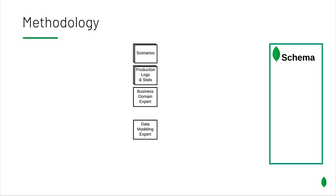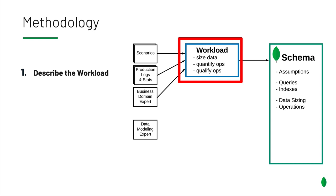Our system will have different inputs. In order to design it, maybe we will get some scenarios from a requirement document, production logs if we're migrating from a relational database to MongoDB, or a prototype that generated logs we can use. We may have a business domain expert — someone who really knows how things should work — that we can interview. And hopefully we also have a data modeling expert to help put everything together. Feeding some of these inputs into our first phase, our first phase is describing the workload, which we need to understand in order to model correctly.